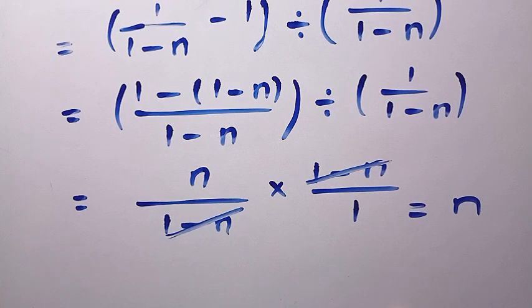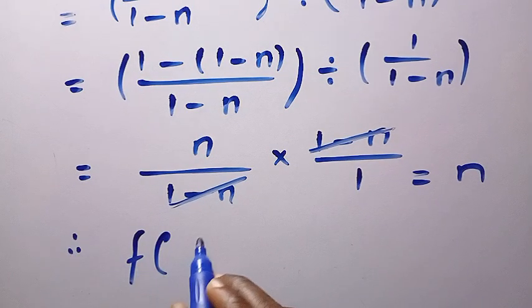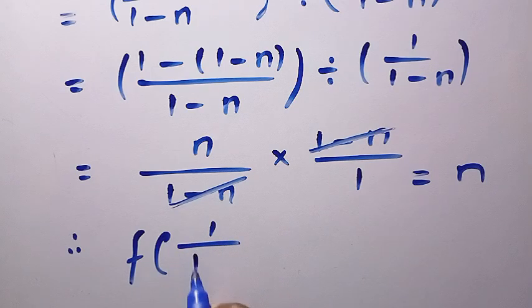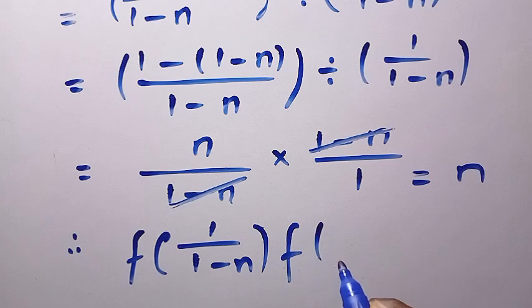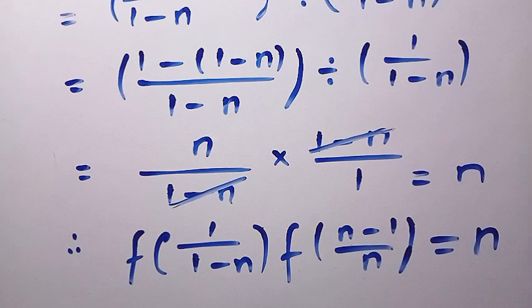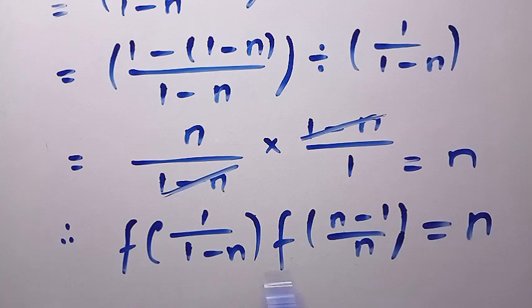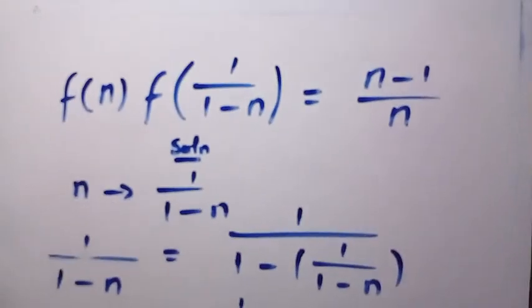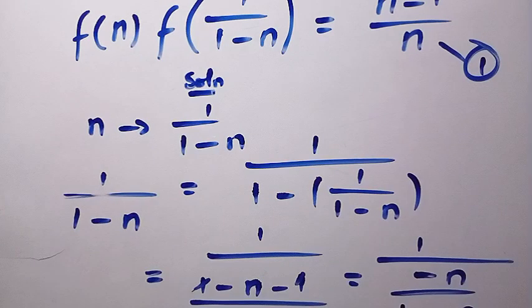Therefore, when we replace n with 1/(1 minus n), we have f of [1/(1 minus n)] multiplied by f of [(n minus 1)/n] equals n. I'm going to call this Equation 2, while the original equation is Equation 1.